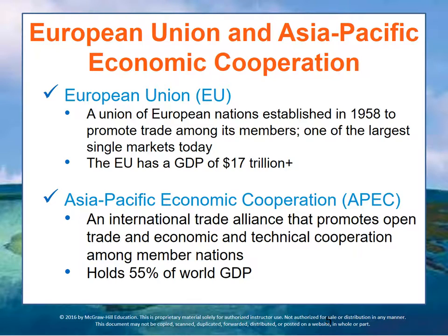Another important trade agreement is the European Union, called the European Community or Common Market. This was established in 1958 to promote trade among its members and is one of the largest single markets today. The EU has nearly half a billion consumers with a GDP of more than $17 trillion. To facilitate free trade among members, the EU is working towards standardization of business regulations and requirements, import duties, value-added taxes, elimination of customs checks, and creation of a standardized currency for use by all members.